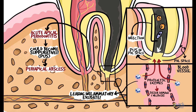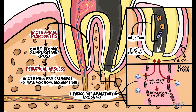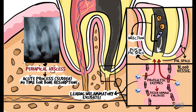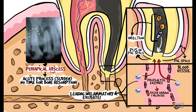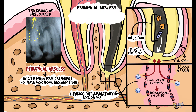A point to note is that the acute inflammatory exacerbation is so sudden that there has not been an elapse of sufficient time to cause bone resorption. Hence the radiograph only reveals a slight thickening of the periodontal ligament space. Periapical abscess arising from apical periodontitis is painful and symptomatic.